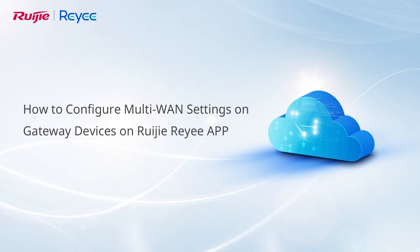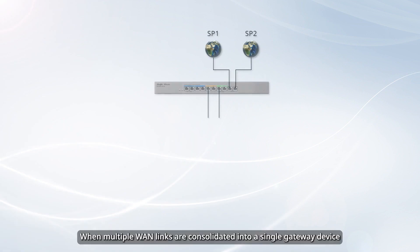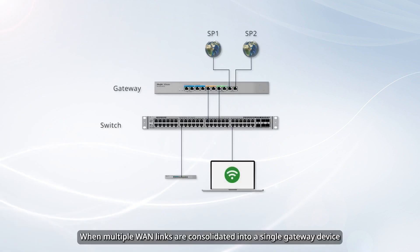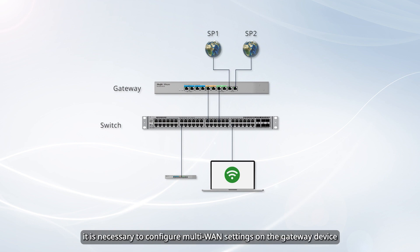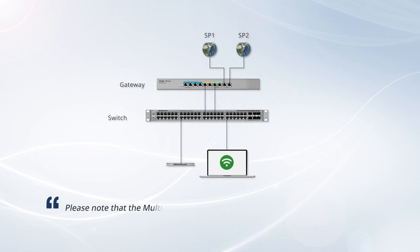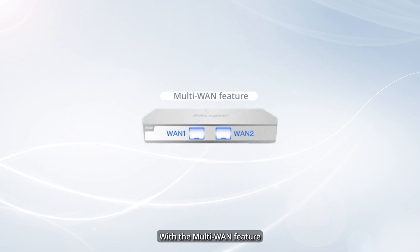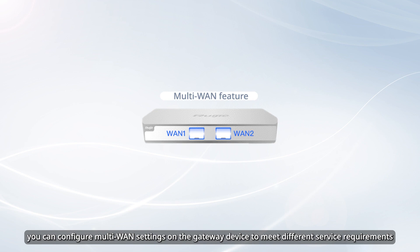How to configure multi-WAN settings on gateway devices on the Ruijie Riii app. When multiple WAN links are consolidated into a single gateway device, to ensure the availability and utilization of these WAN links, it is necessary to configure multi-WAN settings on the gateway device. Note that the multi-WAN feature is supported on Ruijie EG series and NBR series. With the multi-WAN feature, you can configure multi-WAN settings on the gateway device to meet different service requirements.